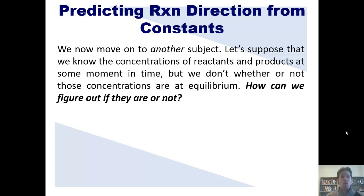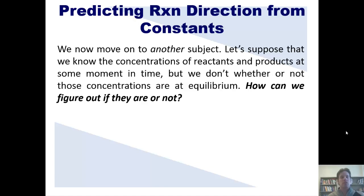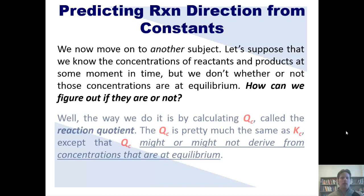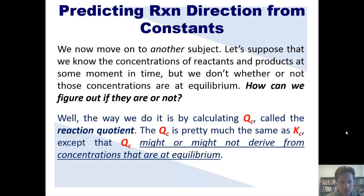I want you to imagine that we have an equilibrium reaction. With that reaction, let's suppose that we do know the concentration of the reactants and the products at some moment in time, but we have no idea whether or not those concentrations are at equilibrium. How can we figure out if this particular reaction at this moment in time is at equilibrium? Well, the way we do this is by calculating QC, which is called the reaction quotient.